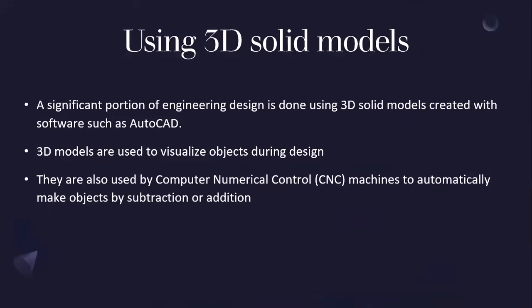A significant portion of engineering design is done using 3D solid models created with software such as AutoCAD. 3D models are used to visualize objects during design. They're also used by computer numerical control (CNC) machines to automatically make objects by subtraction or by addition.